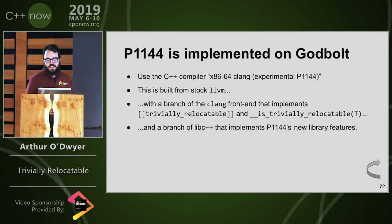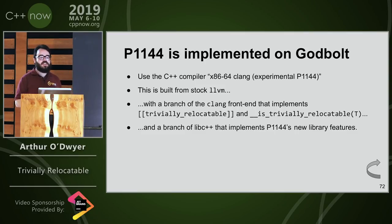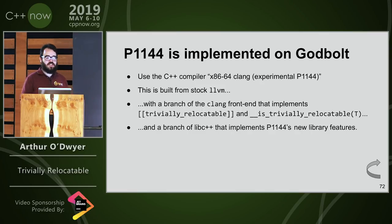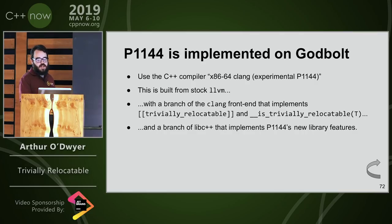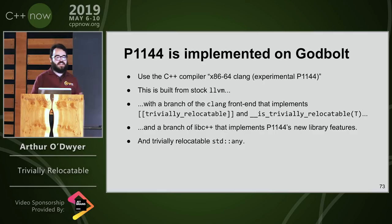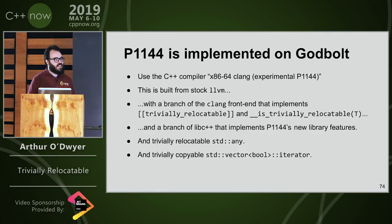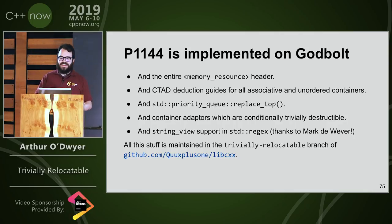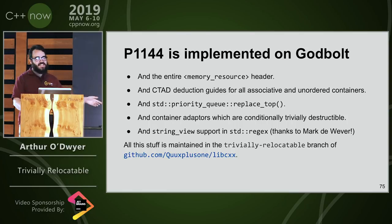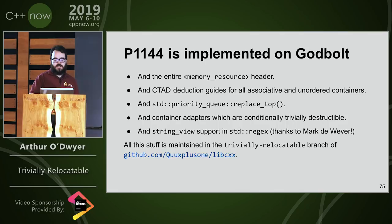P1144 is, as I said, implemented on Godbolt — you can go test it right now. The keyword is P1144. It's built from a stock LLVM backend with a branch of the Clang frontend that I maintain. There is also a Clang pull request out — if anyone would like to help improve this code, that would be awesome. There's a branch of libc++ that implements P1144's new library features: the algorithms, making sure all the types are properly annotated, giving the optimizations we've been seeing in this talk. It also has trivially relocatable std::any, I took an ABI break to give it trivially copyable std::vector<bool> iterator, the entire memory_resource header, CTAD deduction guides for associative and unordered containers, priority_queue replace_top, container adaptors which are conditionally trivially destructible, and string_view support in std::regex. All this stuff is maintained in this branch, and Godbolt pulls from that branch.